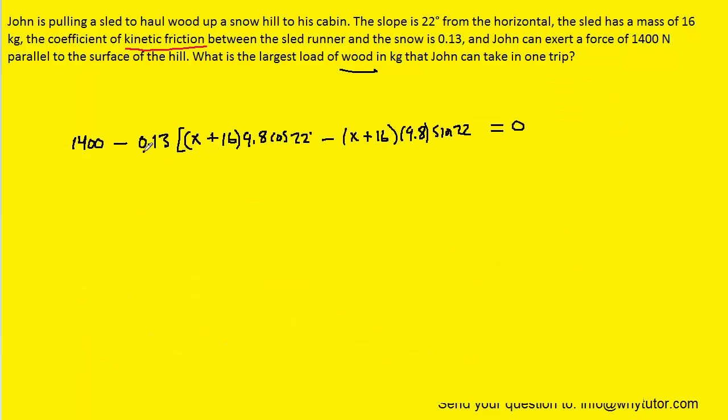Now if you'd like you can pick up your calculator and multiply 0.13 by 9.8 cosine of 22. And when you do that you should get about 1.181. And then we still have the term x plus 16 here. And then you can multiply 9.8 by the sine of 22. And when you do that you should get about 3.671. And that'll be multiplied again by x plus 16.